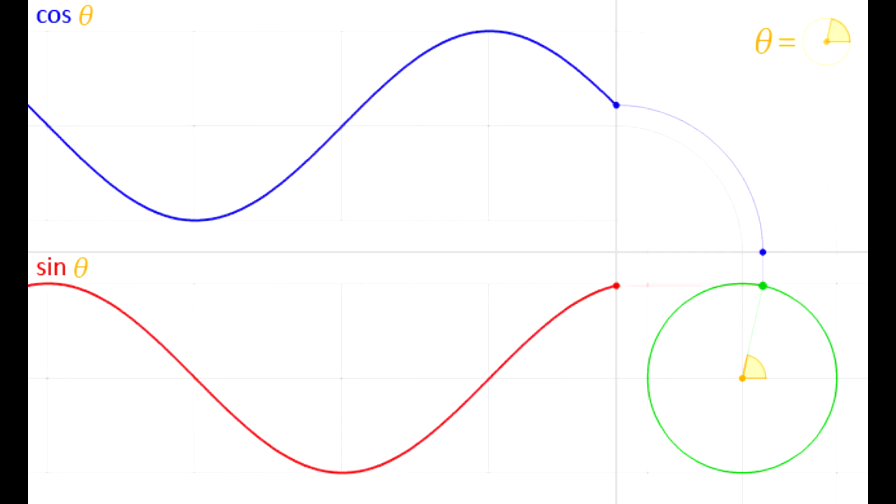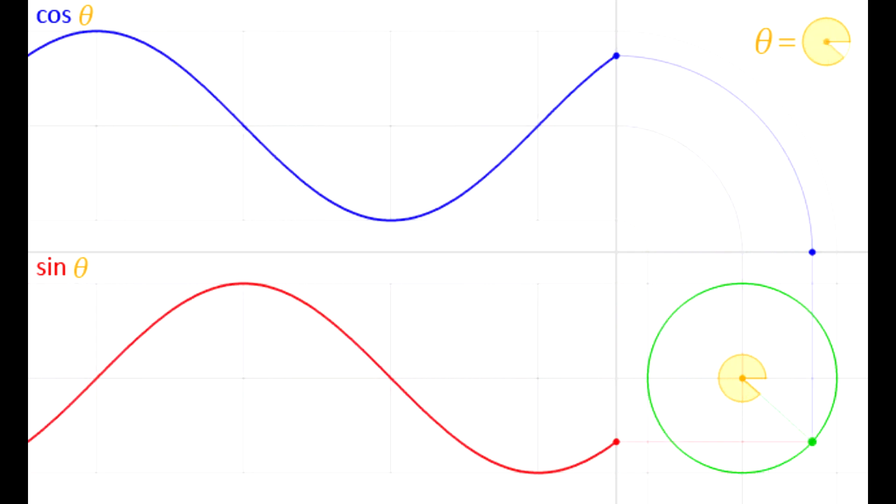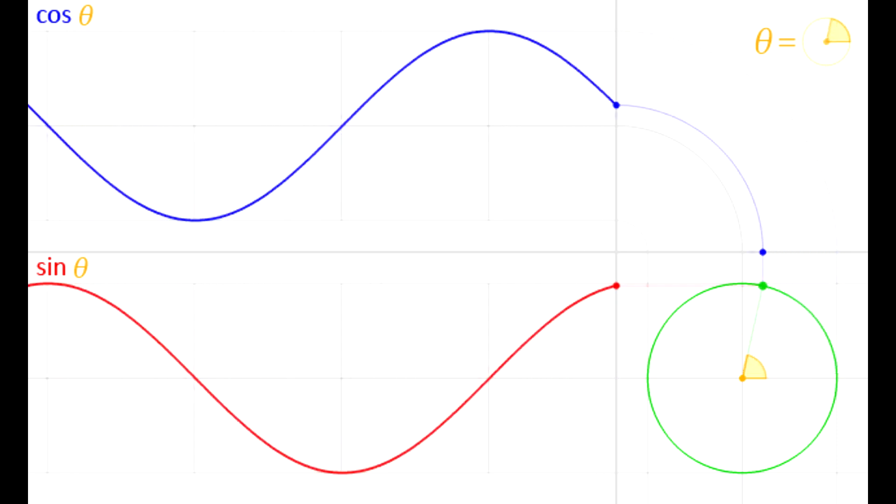But what exactly does phase shift mean? Well, if we look at the two most basic trig functions, cosine and sine, we can see what a difference in phase shift causes.